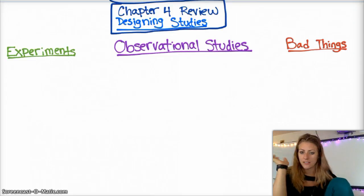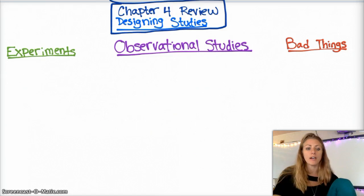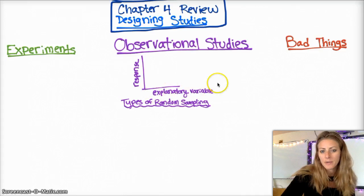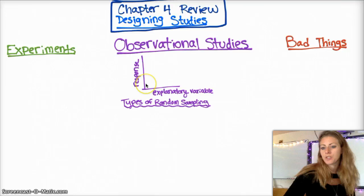The three main things that we covered in this chapter were how to experiment well, how to do observational studies and sample well, and then bad things that can happen when you don't do them well. So we're going to start with the observational studies because that's kind of where we started in the book.